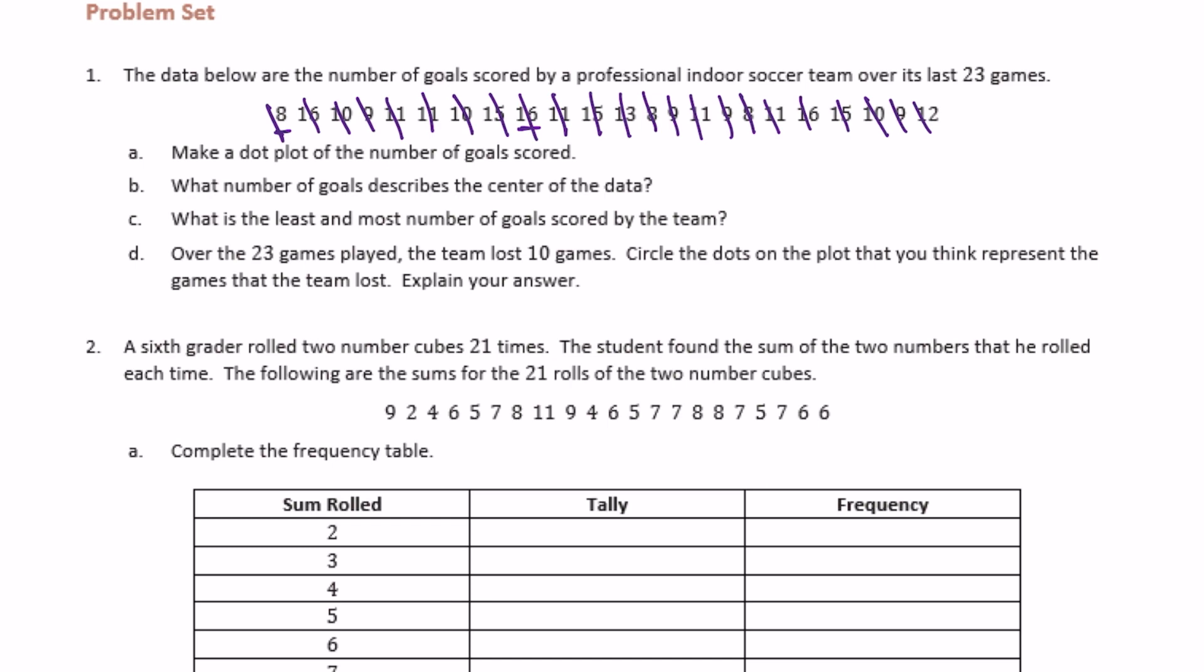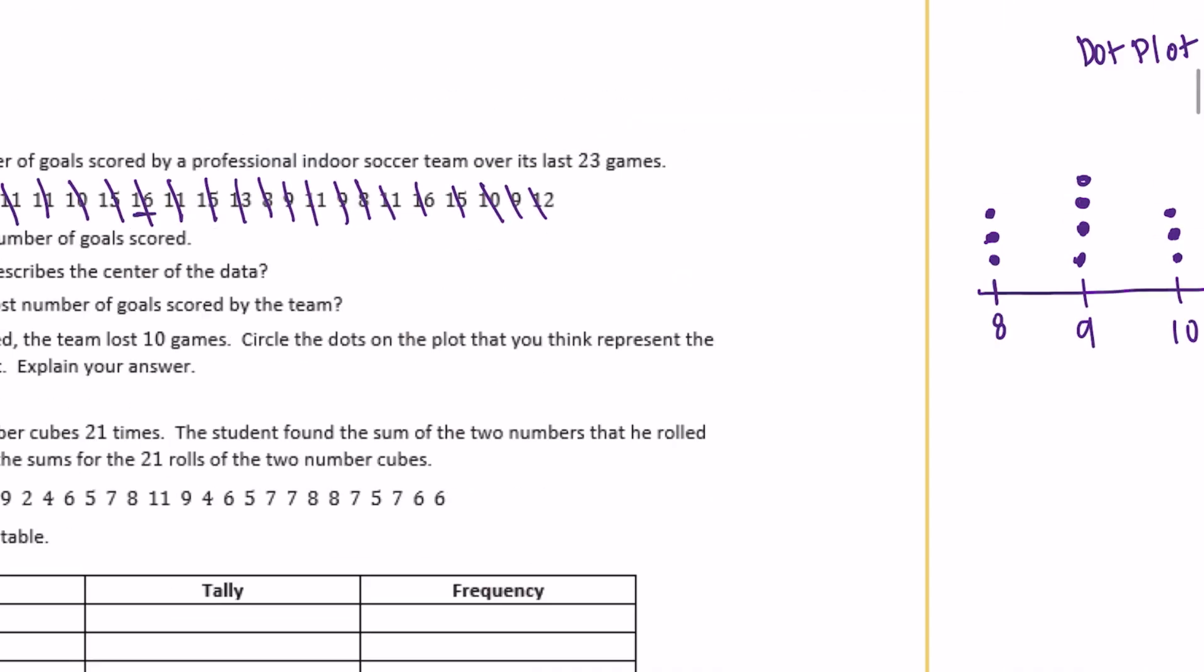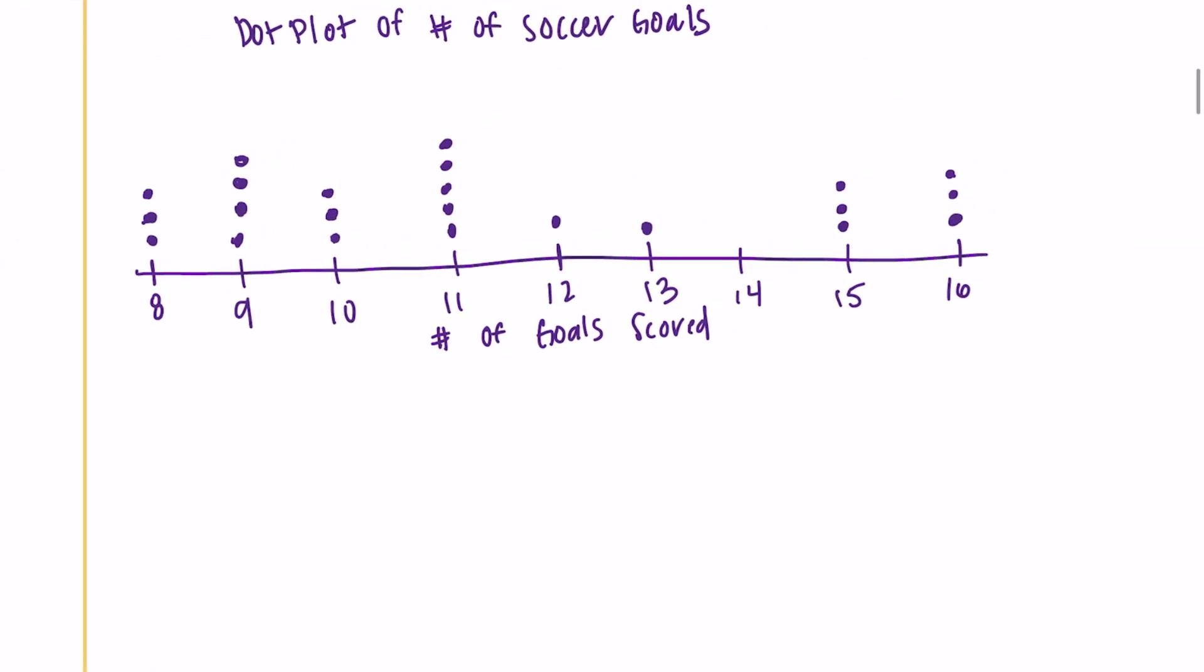And let's see, so we did A. What number of goals describes the center of the data? So if we're going to look at the center of the data, the center of the data I would say is probably around like 11, maybe 12. I'm going to say 11 because most of the dots are kind of centered around 11.